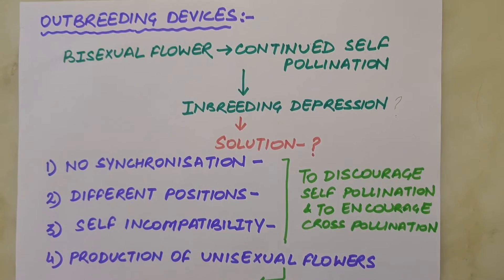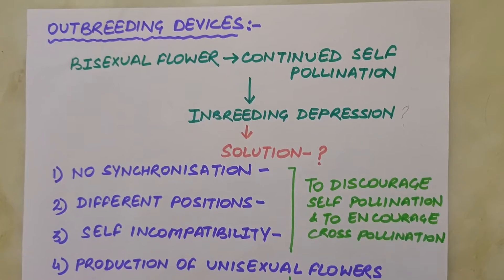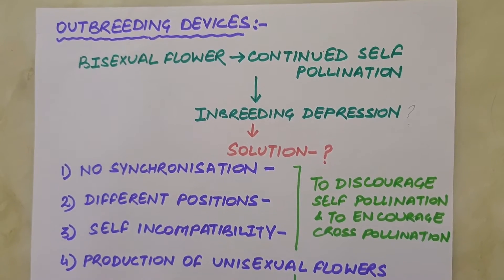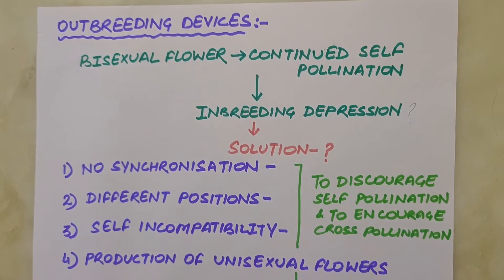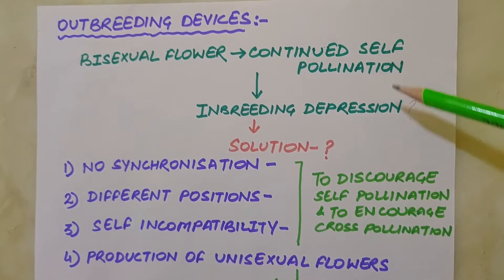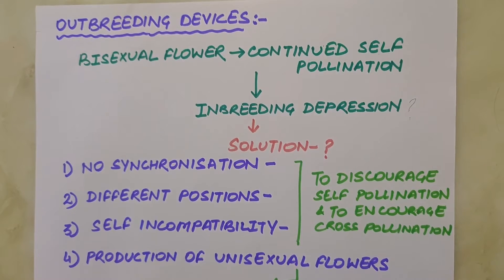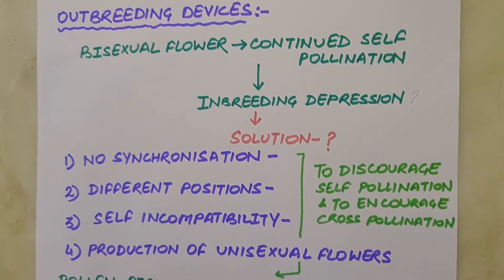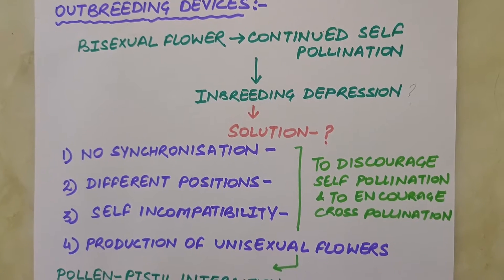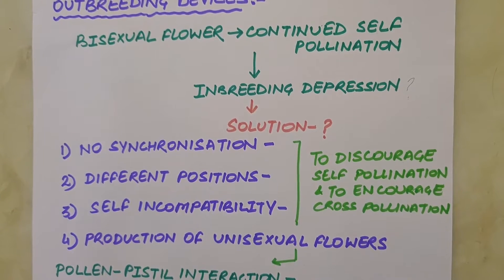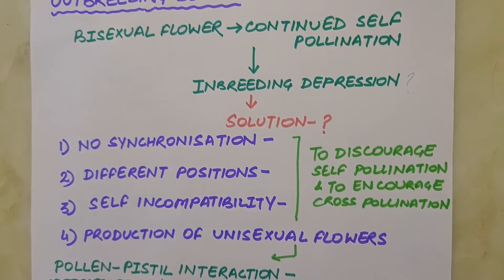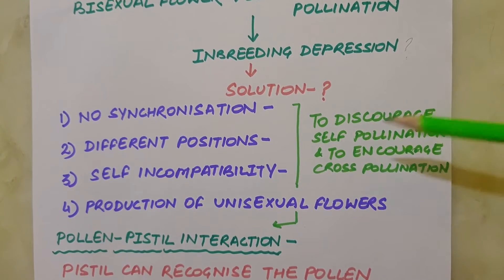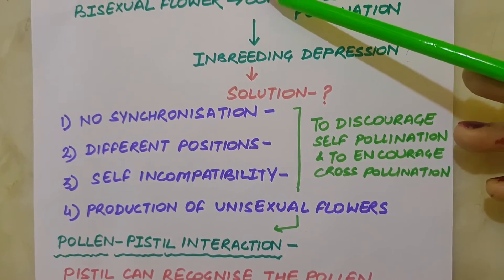So this is all about the agents of pollination. Majority of flowering plants produce bisexual flowers and pollen grains are likely to come in contact with the stigma of the same flower. Continued self-pollination results in inbreeding depression — the reduced biological fitness in a given population due to continuous self-pollination. Flowering plants have developed many devices to discourage self-pollination and encourage cross-pollination, and these devices are called outbreeding devices.